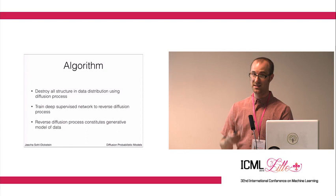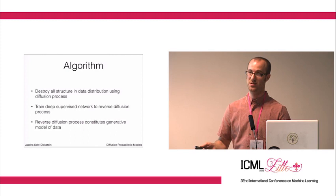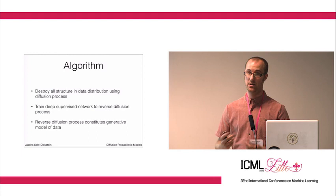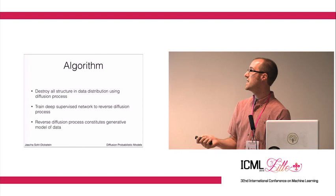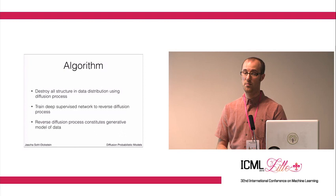So this is going to be our basic algorithm. We're going to destroy all the structure in our data distribution, but we're going to carefully watch the way in which the structure is destroyed. Each trajectory where we erase the structure in a data point is going to be a training trajectory for the reverse process. Then we're going to train a deep supervised network to reverse that diffusion process.